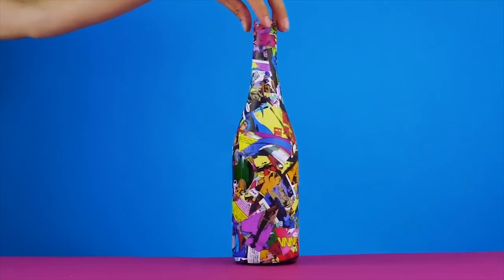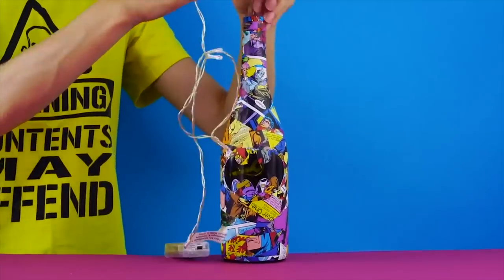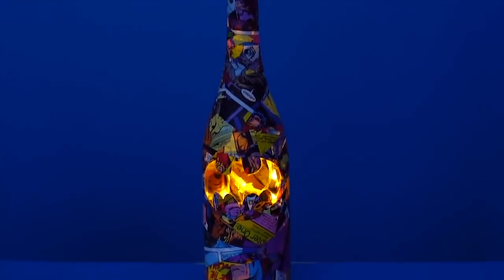Now for the lamp part. Feed some string lights inside the bottle. Turn the lights on to illuminate the bat signal.